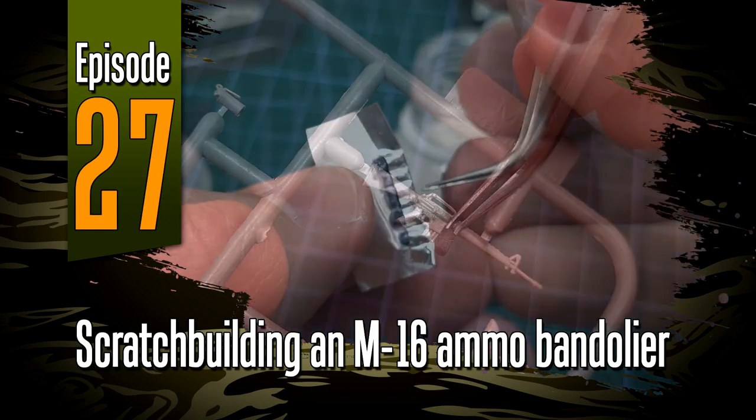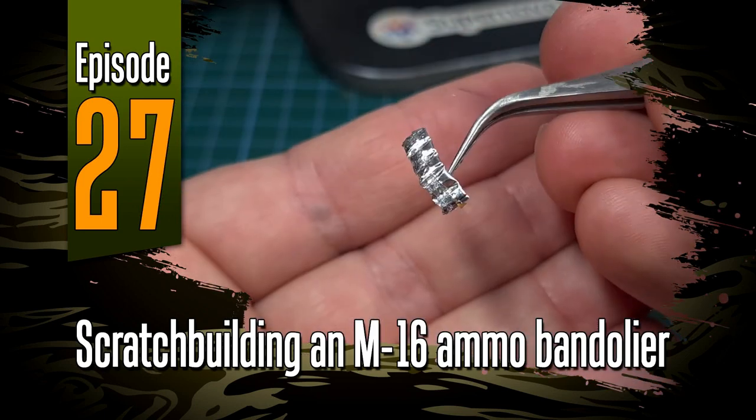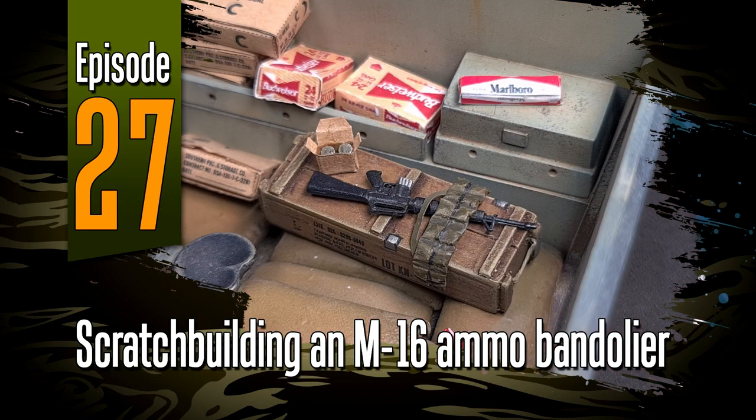Hi guys and welcome to another episode of Off the Sprew. This is episode 27 and in this one I'll show you a quick and easy way of making ammunition bandoliers in 1:35 scale.